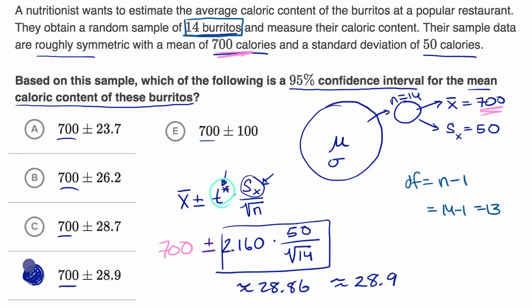Now one thing that we should keep in mind is, is this a valid confidence interval? Did we meet our conditions for a valid confidence interval? And here we have to think, well, did we take a random sample? And they tell us that they obtained a random sample of 14 burritos, so we check that one. Is the sampling distribution roughly normal?